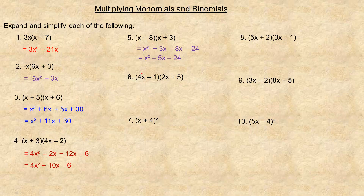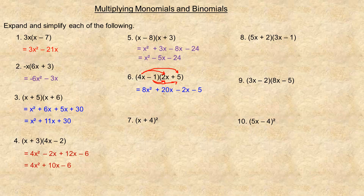For number 6, 4x times 2x is 8x squared. Then 4x times 5 is 20x, and negative 1 times 2x is minus 2x, and negative 1 times 5 is minus 5. The like terms give 20x minus 2x, which is 18x. So the answer is 8x squared plus 18x minus 5.